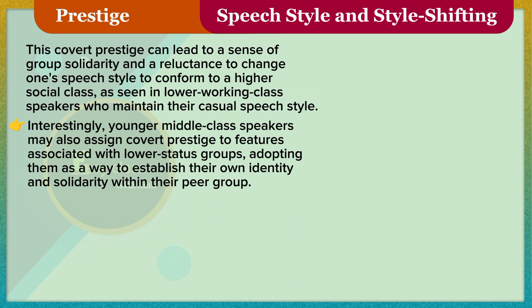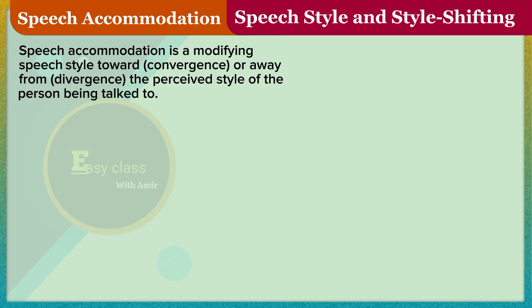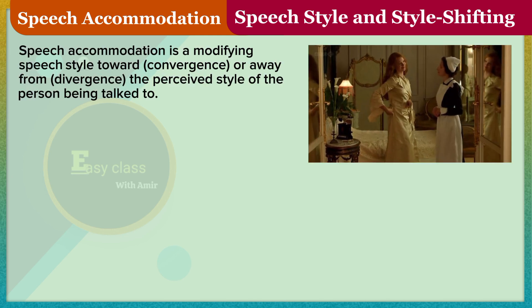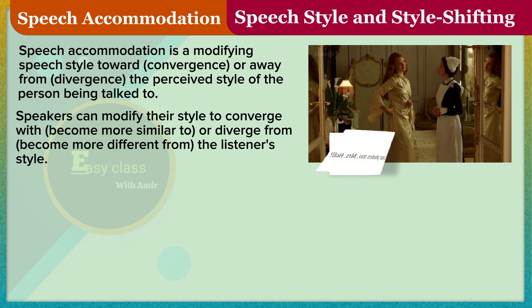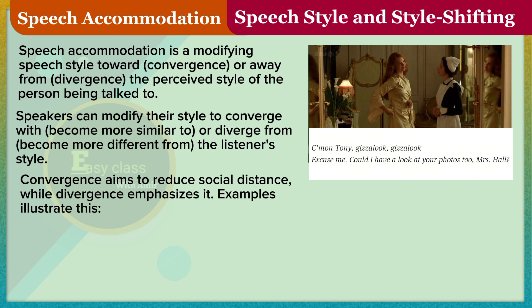Interestingly, younger middle-class speakers may also assign covert prestige to features associated with lower-status groups, adopting them as a way to establish their own identity and solidarity within their peer group. Speech accommodation is a modifying of speech style toward convergence or divergence from the perceived style of the person being talked to. Speakers can modify their style to converge with — become more similar to — or diverge from — become more different from — the listener's style. Convergence aims to reduce social distance, while divergence emphasizes it.